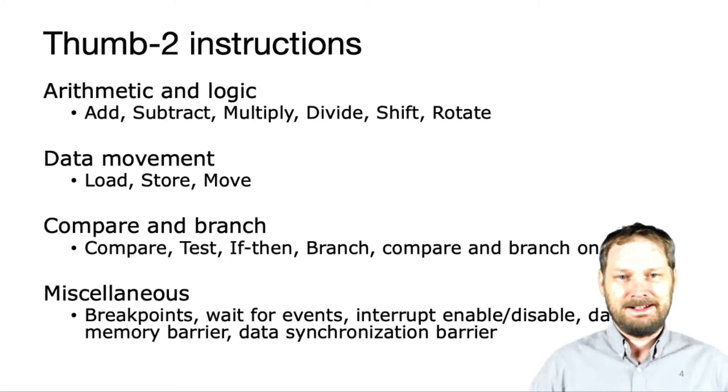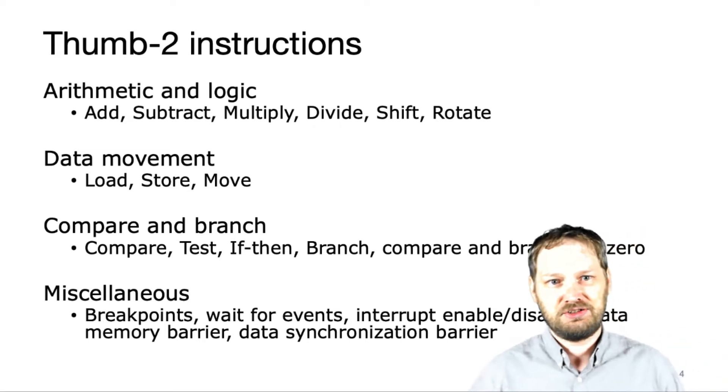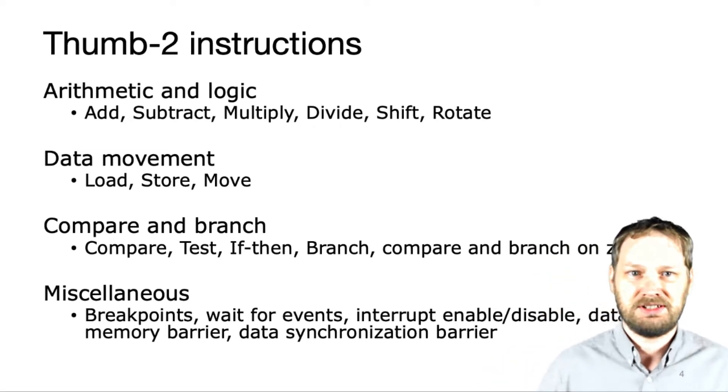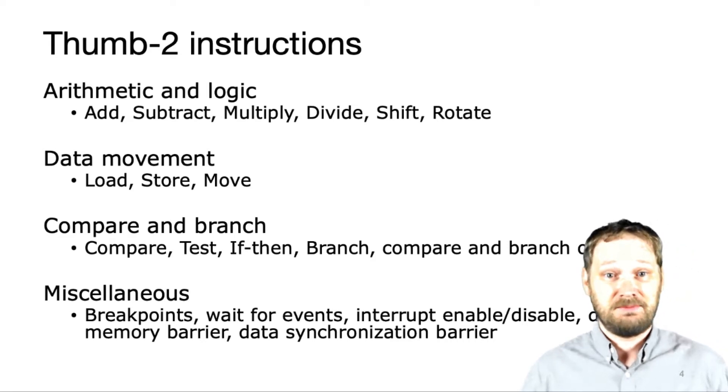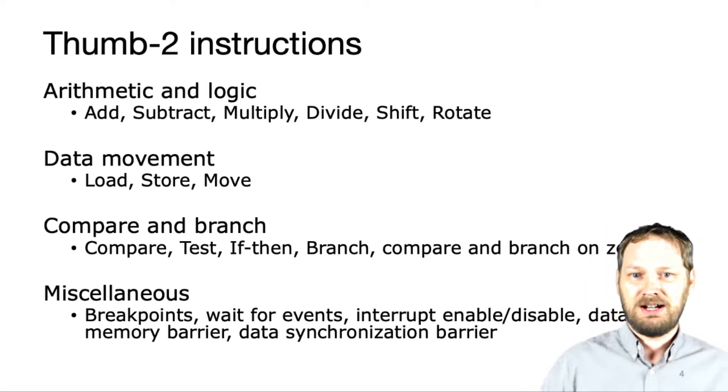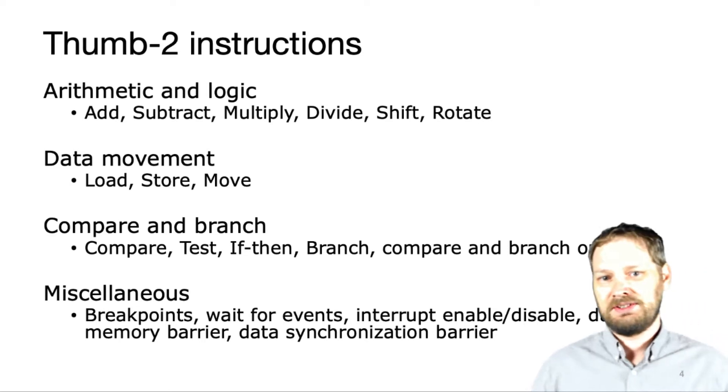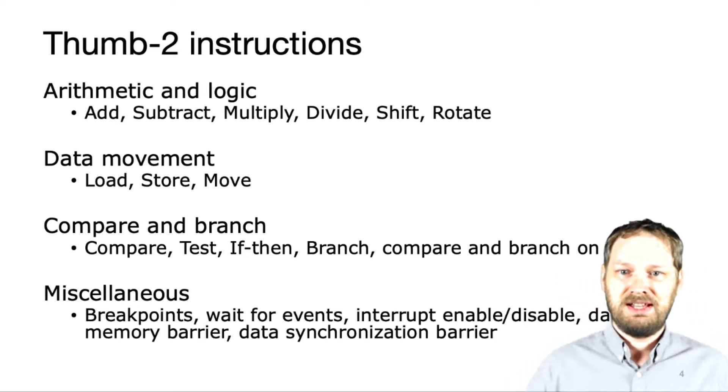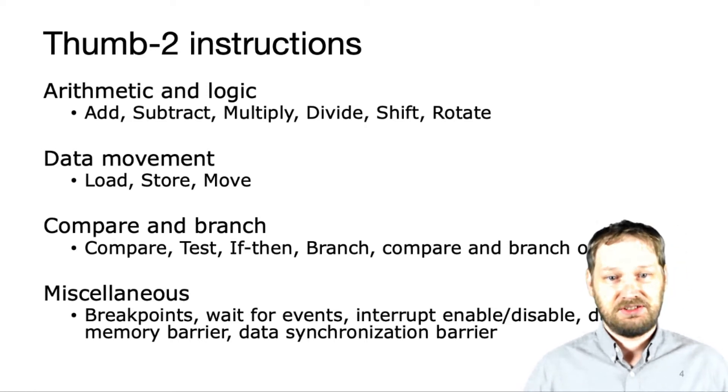All right. So as we reviewed last time, the Thumb2 architecture or the Thumb2 instruction set defines four basic types of instructions. We have arithmetic and logic instructions, data movement structure instructions that move things in and out of memory or around the registers, branching operations and compare operations for program control, and then there's a bunch of miscellaneous instructions like breakpoints for debugging, wait events, handling interrupts, synchronizing data.